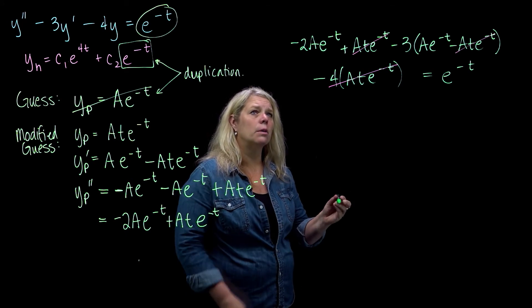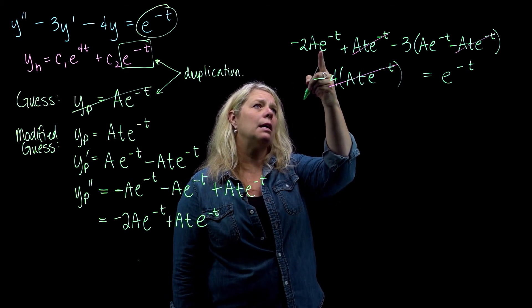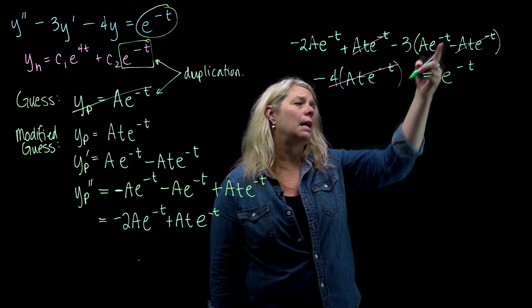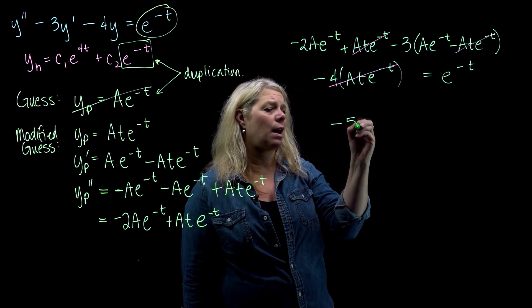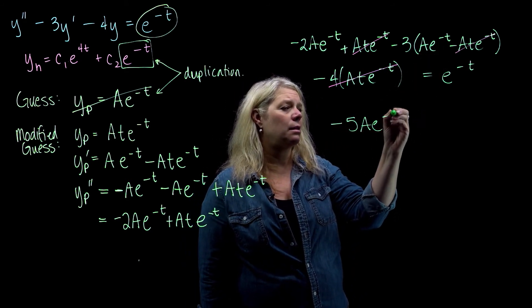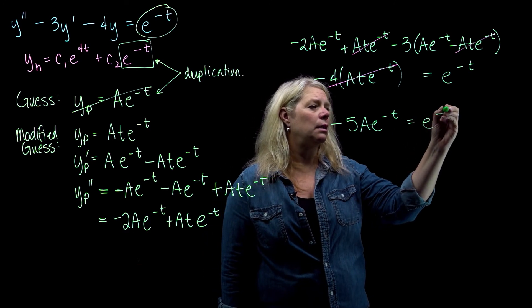And so, we'll just get minus 2A e to the negative t, minus 3A e to the negative t, so minus 5A e to the negative t equals e to the negative t.